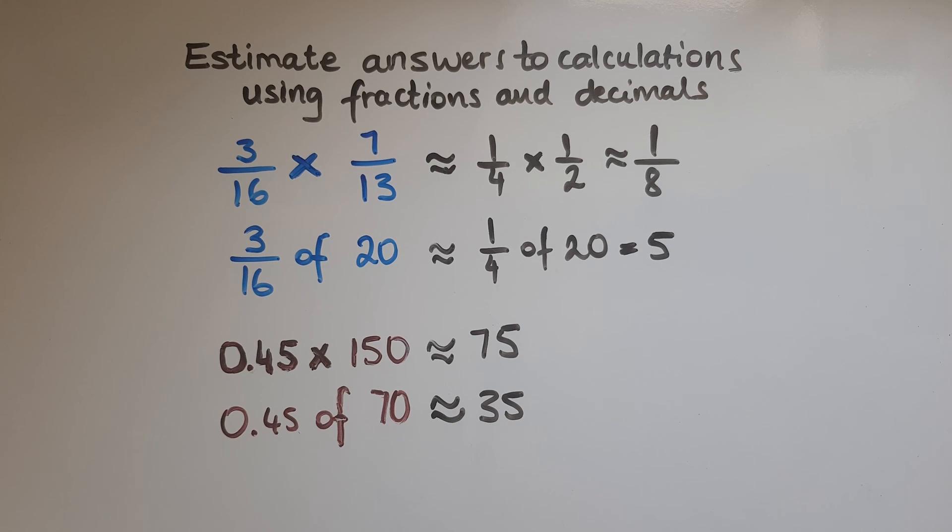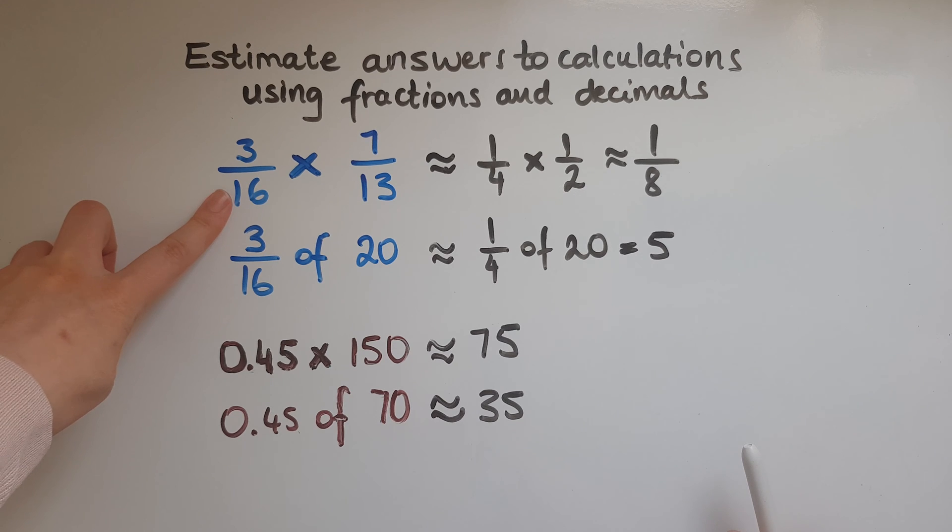So when it comes to estimating, as we said, we round the figures. We're looking at what they're closer to. Sometimes we have to simplify. Sometimes we have to scale up. Like we did here, that was 16. So if I divided it by 4, that would give us 4. So that gave me the suggestion that this is about a quarter.